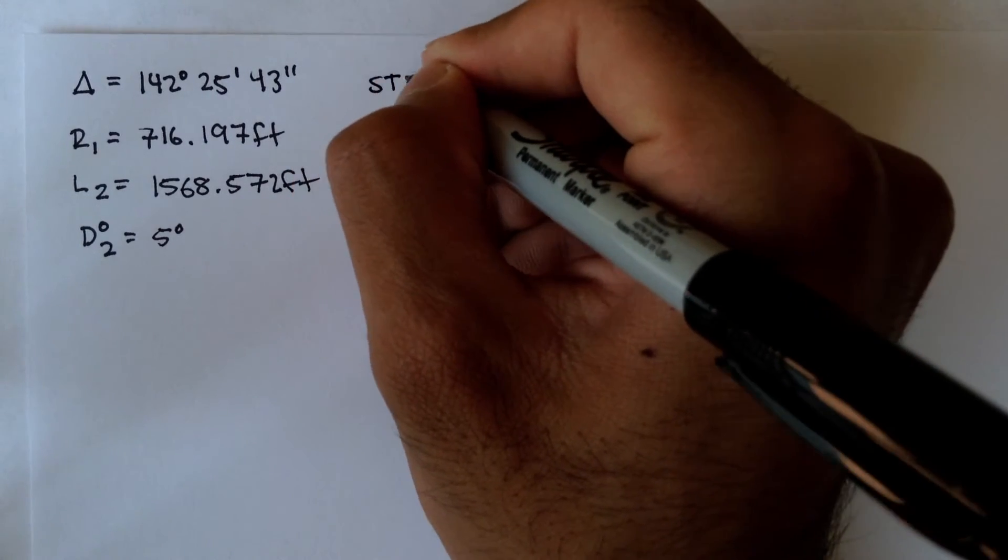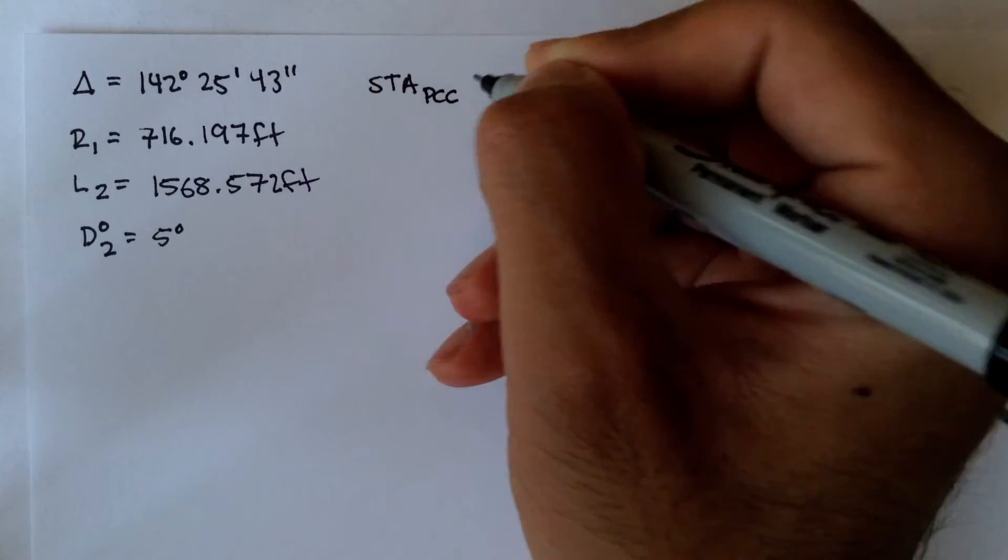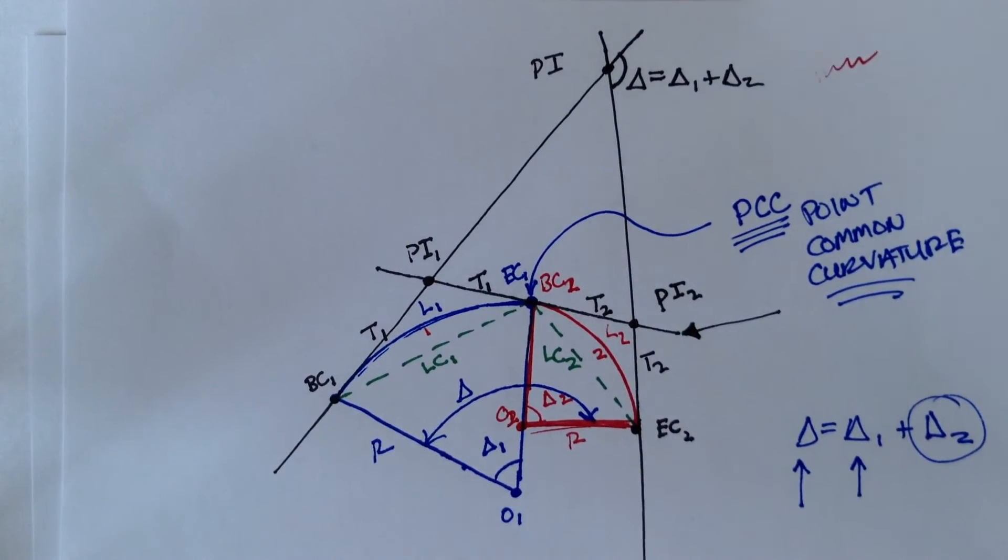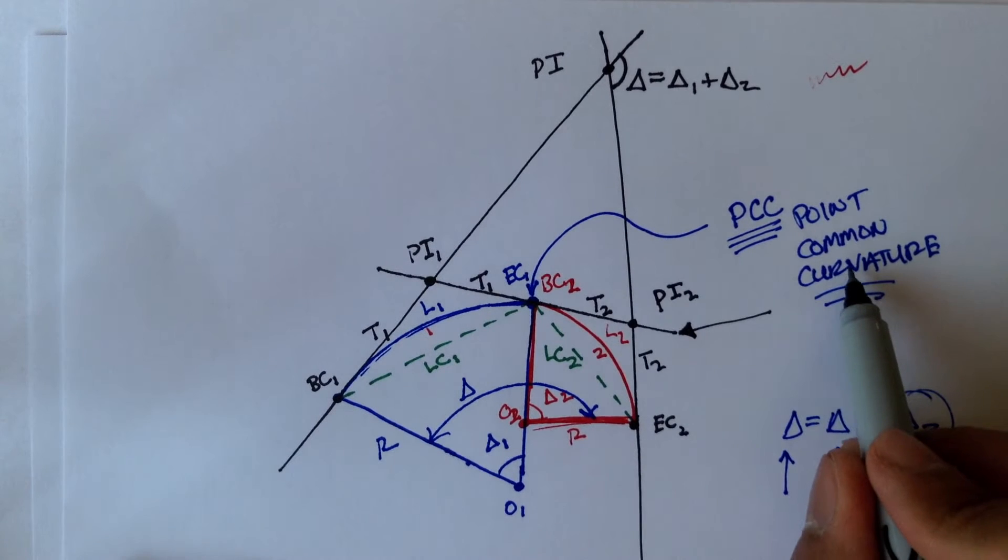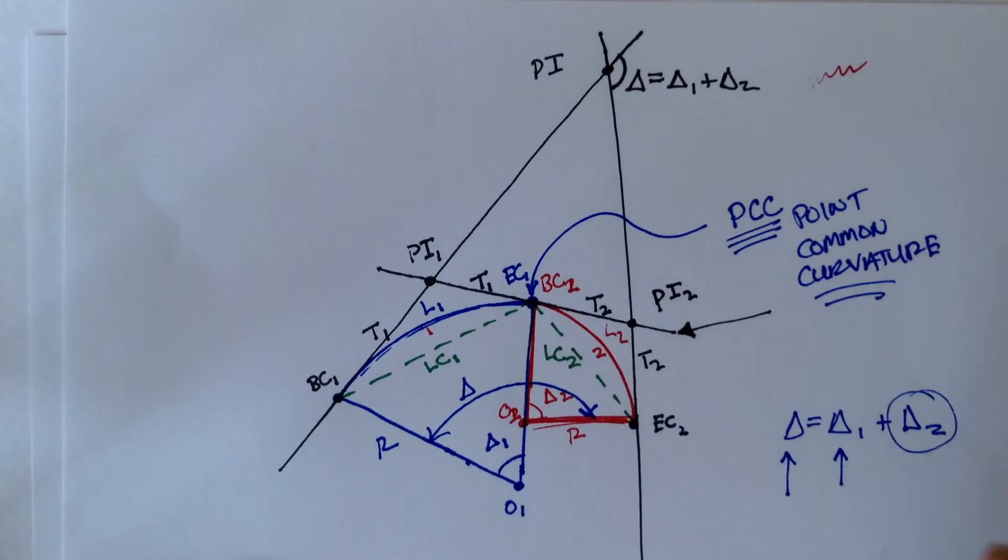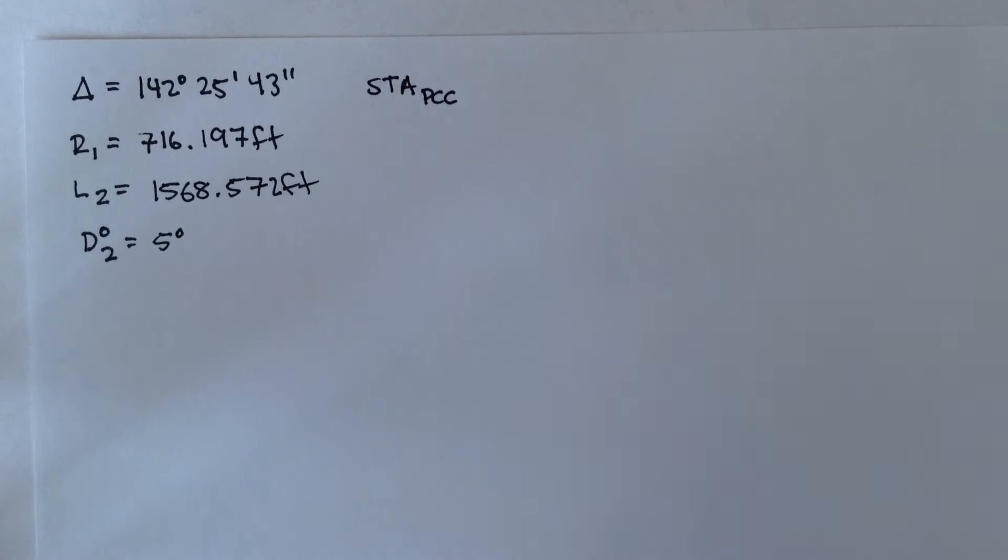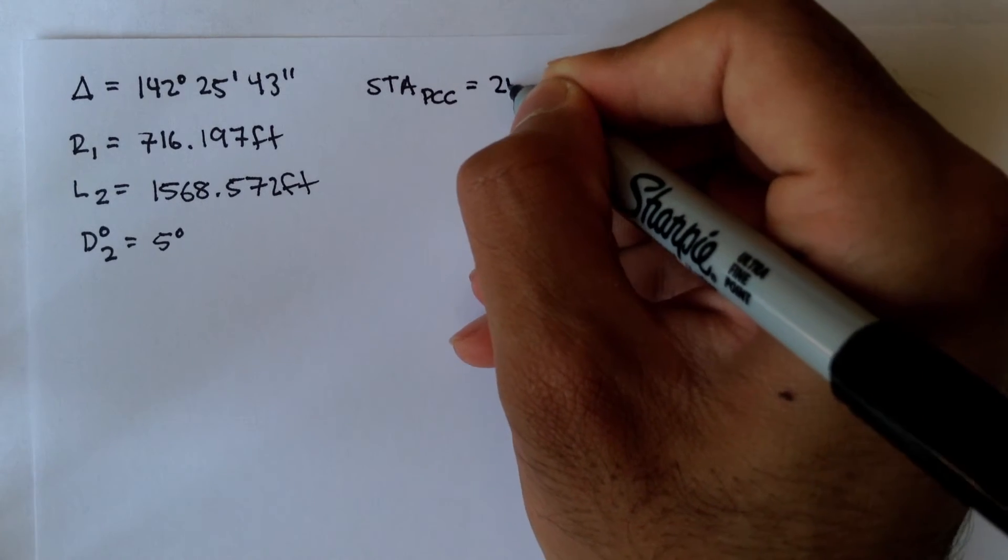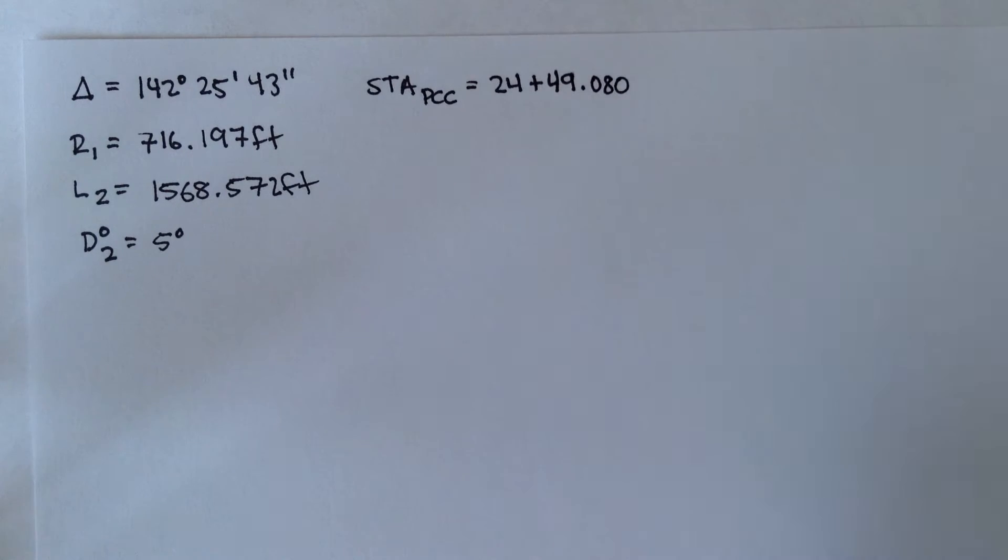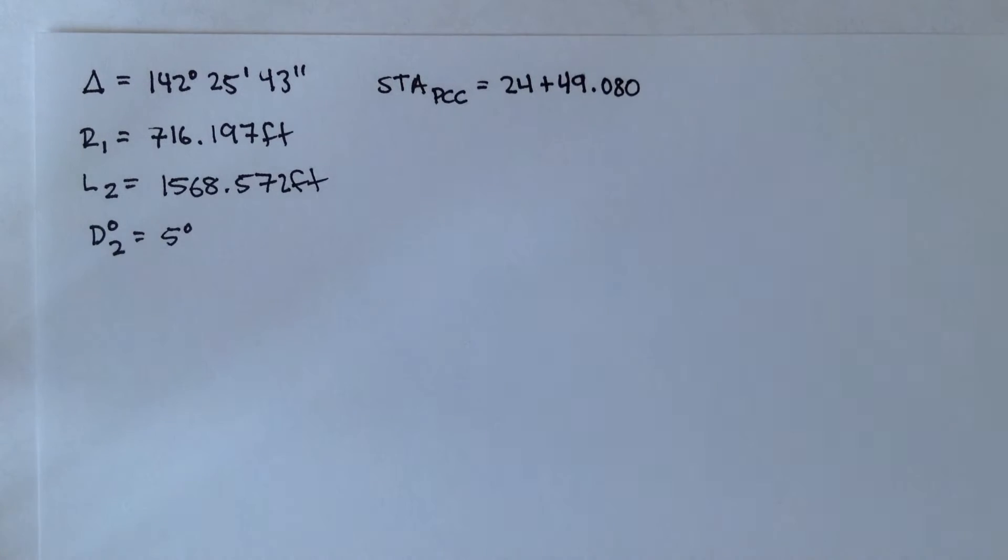The station for the point of common curvature, and remember the point of common curvature on this diagram is this point right here. It's where the first curve ends and where the second curve begins. So that station is given as 24 plus 49.080. And with this information, we're going to figure out a couple things.